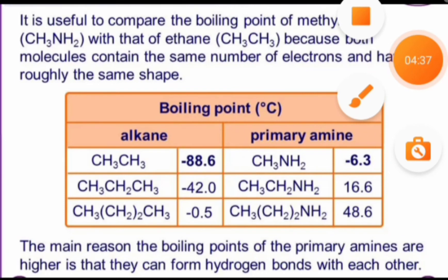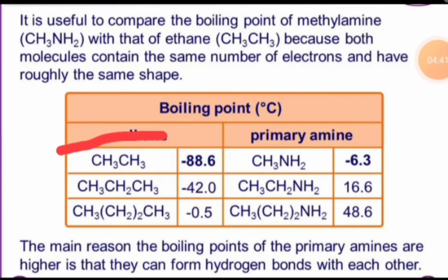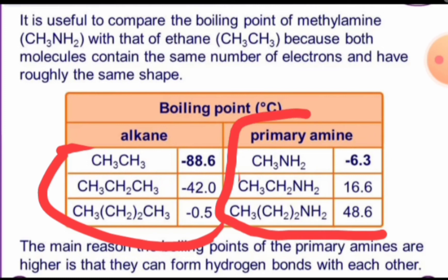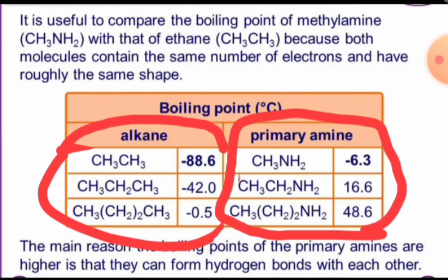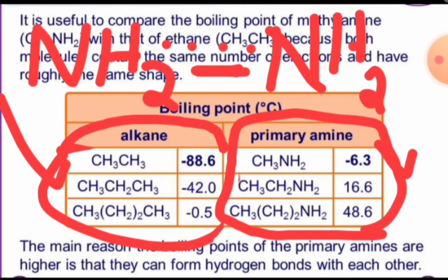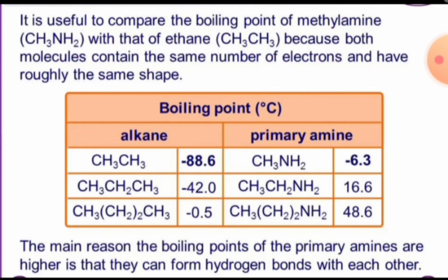Another physical property is boiling point. Comparing the boiling points of alkanes and amines, amines have higher boiling points than alkanes. The reason is intermolecular hydrogen bonding — between one amine molecule and another amine molecule, intermolecular hydrogen bonds exist, which are absent in alkanes. Because of this intermolecular hydrogen bonding, amines have higher boiling points compared to alkanes. Only primary and secondary amines can form hydrogen bonds; tertiary amines cannot form hydrogen bonds because they have no N–H hydrogen.